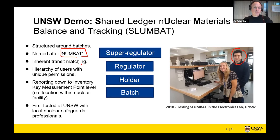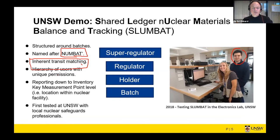We found that when you use blockchain to do a job like this, you inherently transit-match your batches. Because assets on a blockchain are not fungible, if I send you something I have to lose it so that you can have it — it's actually like an entity, not just an accounting number. That naturally enforces transit matching, which is very useful in safeguards because the Atomic Energy Agency uses an awful lot of effort trying to match up accounting reports from different participants. We first tested it at UNSW with local nuclear safeguards professionals and some people from ANSTO.